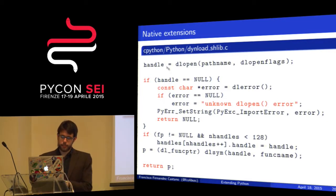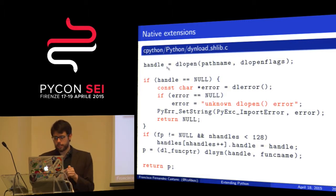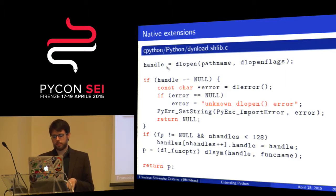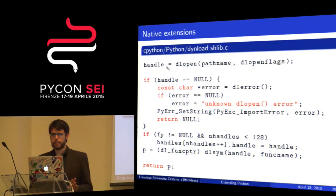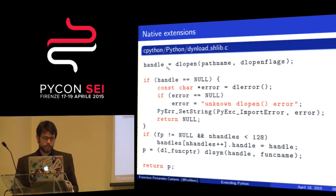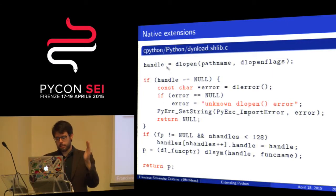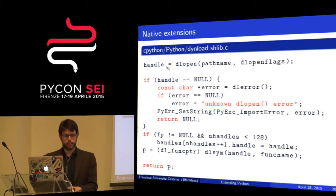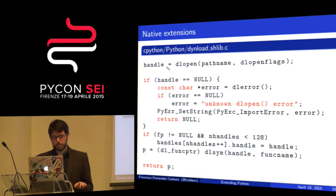We can also use CFFI at ABI level — again the Fibonacci example. I create an ffi object, define the function signature I will use: it returns an integer, the name is fib, and it takes an integer. The interesting thing is that if we are wrapping a struct and don't know all the fields, we can provide a subset of what we know and the compiler behind this will take care of the rest. I dlopen the library and use Fibonacci — working at ABI level, same as ctypes.